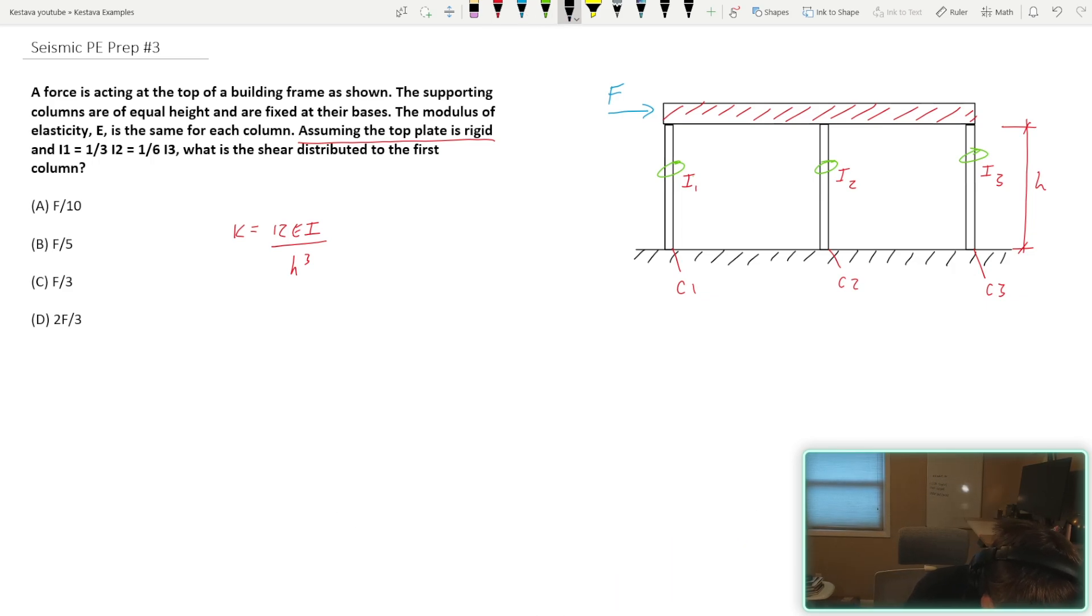So you're not giving a numerical value, but instead you're giving a proportion of your story force F. Well, how can we do that? Well, if we take this, we know that E is the same for all. I'm just going to do a check mark. H, all three columns are the same height. So that's a constant as well.